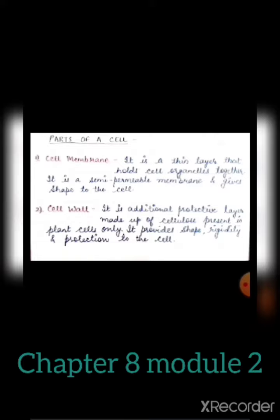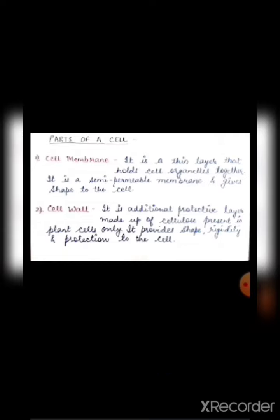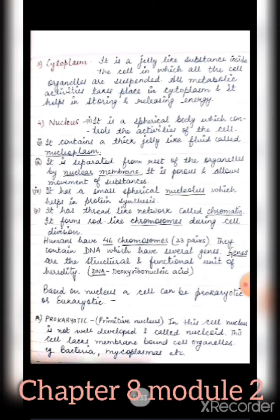The cell wall is present in plant cells only because plants cannot move from place to place — they remain rooted at a particular spot. They also experience harsh environmental conditions, so the cell wall provides additional protection. It is made up of cellulose, which is a complex substance.